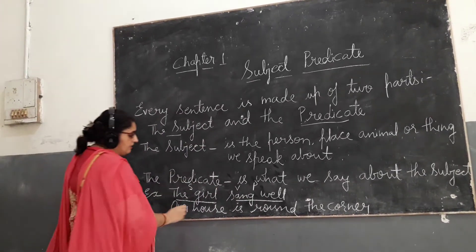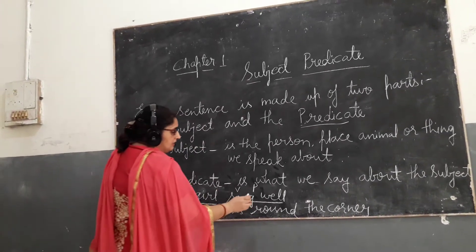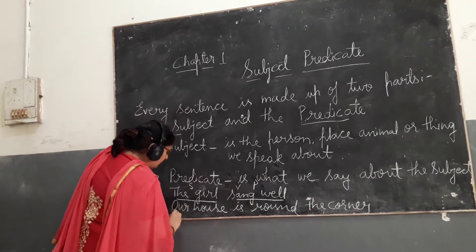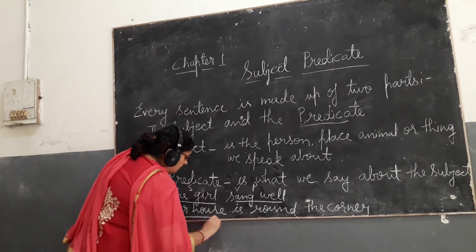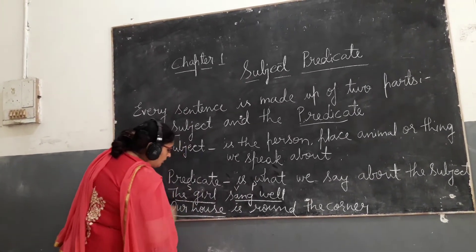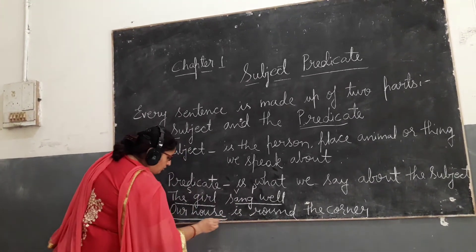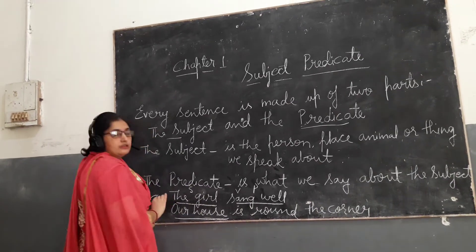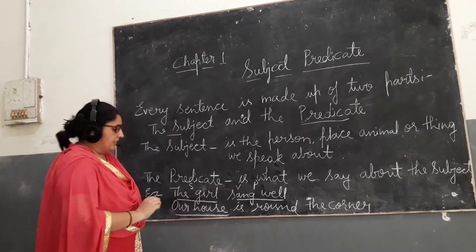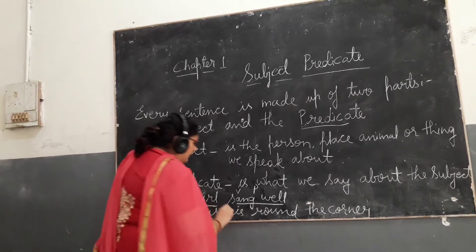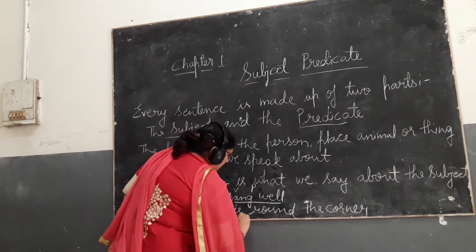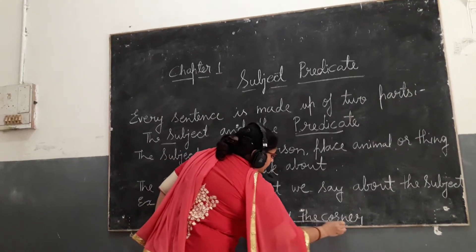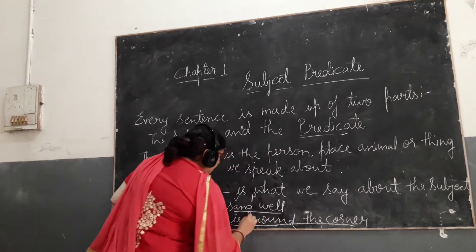Another example: 'Our house is round the corner.' Here, 'our house' is the subject, and 'is round the corner' is the predicate.